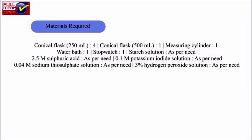Materials required: 4 conical flasks of 250 ml, 1 conical flask of 500 ml, a measuring cylinder, a water bath, a stopwatch, starch solution, 2.5 M sulfuric acid, 0.1 M potassium iodide solution, 0.04 M sodium thiosulphate solution, and 3% hydrogen peroxide solution.